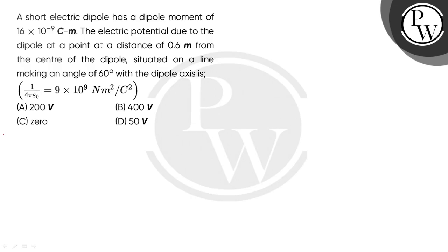Let's read the question. A short electric dipole has a dipole moment of 16 × 10⁻⁹ C·m. The electric potential due to the dipole at a point at a distance of 0.6 meter from the center of the dipole, situated on a line making an angle of 60 degrees with the dipole axis.